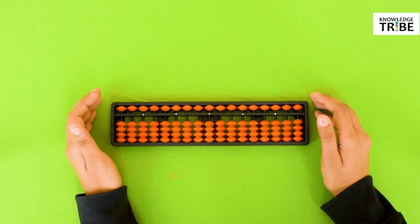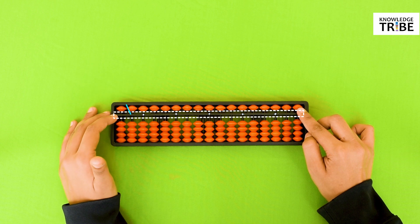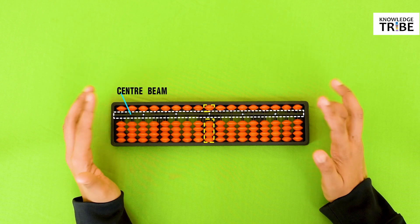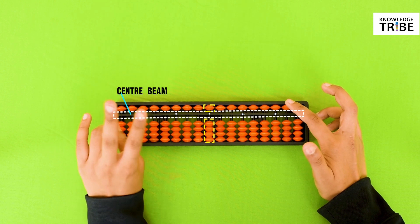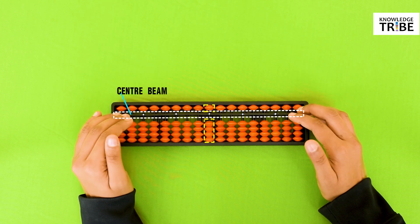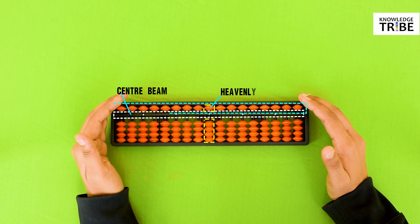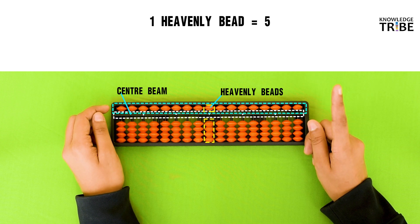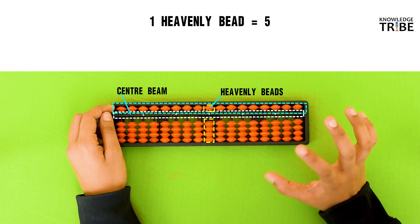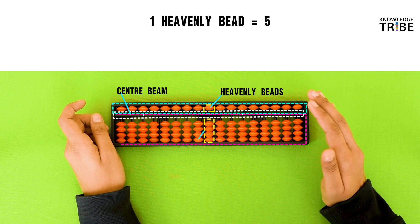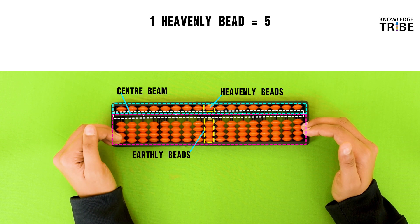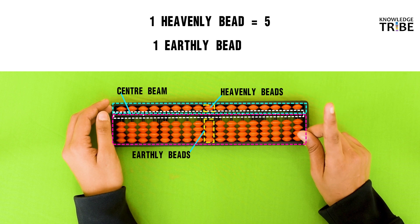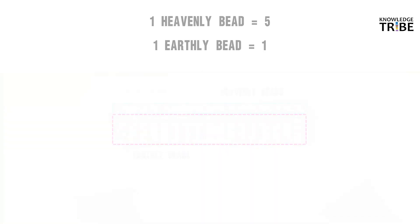Now let us learn about the physical structure of an Abacus. It is very simple. This is the central beam of an Abacus and these little things are called the beads. These beads in an Abacus are of two types. The beads above the center beam, the upper deck, are called the heavenly beads. The value of one heavenly bead is 5. The beads below the center beam, the lower deck, are called the earthly beads. The value of one earthly bead is 1. Simple isn't it?